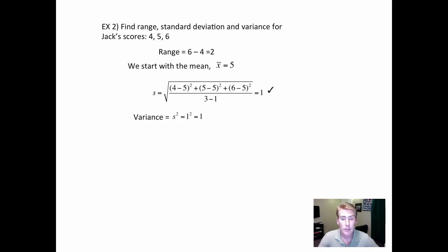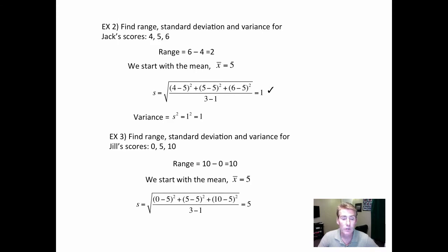Next, the variance: like I say, just take the standard deviation and square it. In this case, one squared is still one. Now with Jill's scores: a zero, a five, and a ten. Here we go with the range. Top minus bottom is ten.